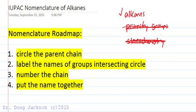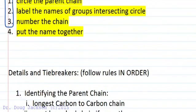Let's look at our nomenclature roadmap. These are the four general steps to give ourselves the most likelihood of getting the correct IUPAC name. The first three steps are like diagramming sentences. We're going to circle the parent chain, label the names of groups intersecting this circle, and then number the chain physically on the page so we have all the tools we need to put the name together using proper formatting at the end. The first three don't actually get us the name on paper but they get us ready to assemble that name properly using all the steps and tiebreakers involved.